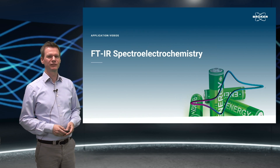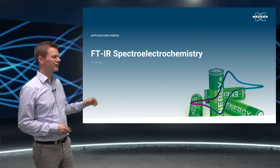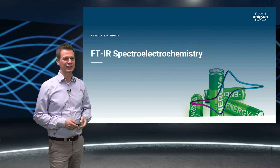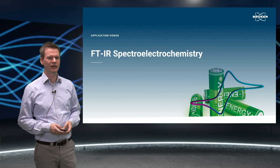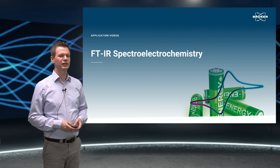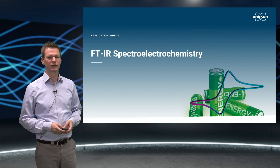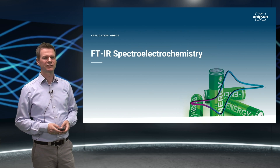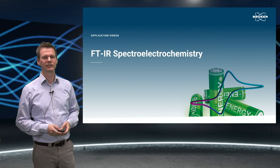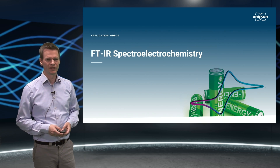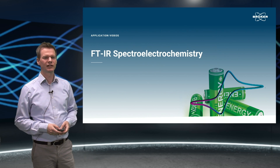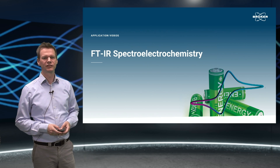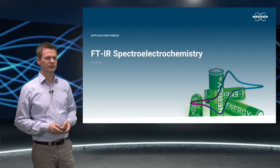Welcome to our application video with today's topic: FTIR spectro electrochemistry. FTIR spectro electrochemistry brings together both worlds — IR spectroscopy, giving important information about changes in chemical bonds and molecules, and electrochemistry, giving insights into oxidation or reduction processes and properties. This combined method is a very useful tool in the field of battery research or electrochemical conversion, and allows to offer solutions in a world where fossil energy resources contribute to the climate crisis.